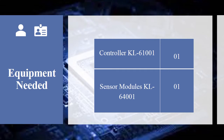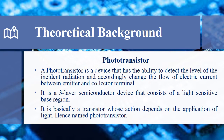Equipment needed for our experimentation are controller KL6101 and the sensor module KL6400. Moving towards the theoretical background of this experiment: a phototransistor is a device that has the ability to detect the level of incident radiation — that is, light.